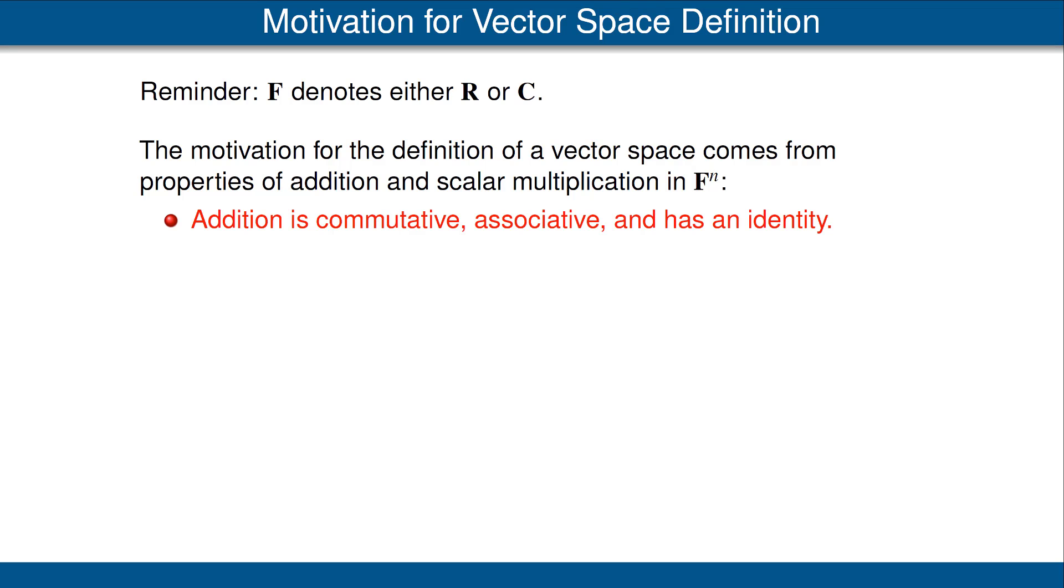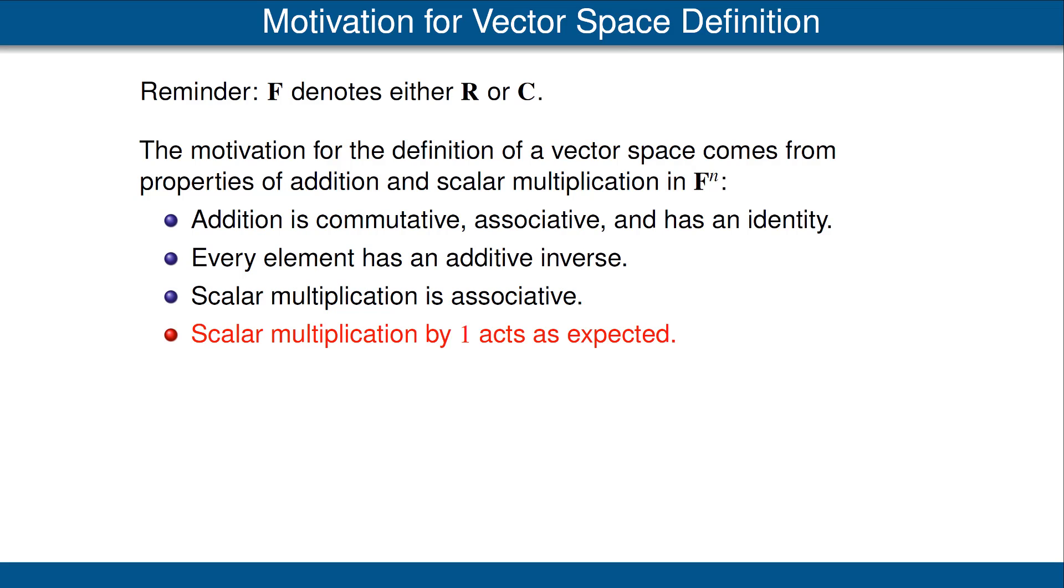Addition in F^n is commutative, associative, and has an identity. Every element of F^n has an additive inverse. Scalar multiplication in F^n has the appropriate associative property. Scalar multiplication by 1 in F^n acts as expected, meaning that 1 times a vector equals that vector. And finally, addition and scalar multiplication are connected by distributive properties. The properties of addition and scalar multiplication in F^n listed in these bullet points are precisely what we will use to get our definition of a vector space.